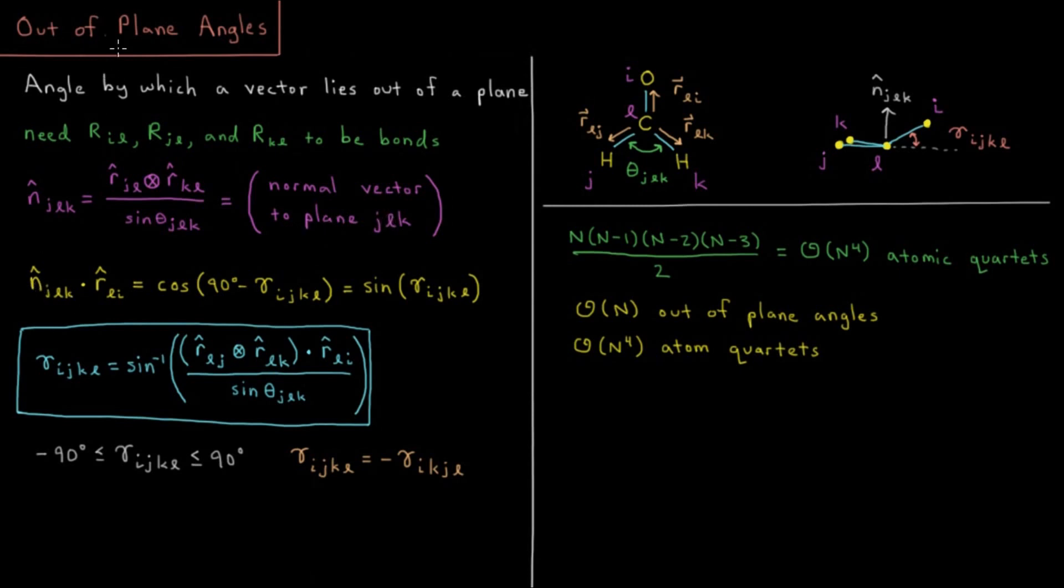Now what we do to get our out-of-plane angle is we take the dot product of this unit vector with unit vector r-hat li. The dot product of those two is equal to the cosine of 90 degrees minus our phi angle here. The cosine of 90 minus x is equal to the sine of x, so the cosine of 90 minus phi equals sine of phi. To get our angle, we take the arc sine of this. So gamma ijkl equals arc sine of r-hat lj cross r-hat lk, that result dot r-hat li, divided by sine theta jlk.